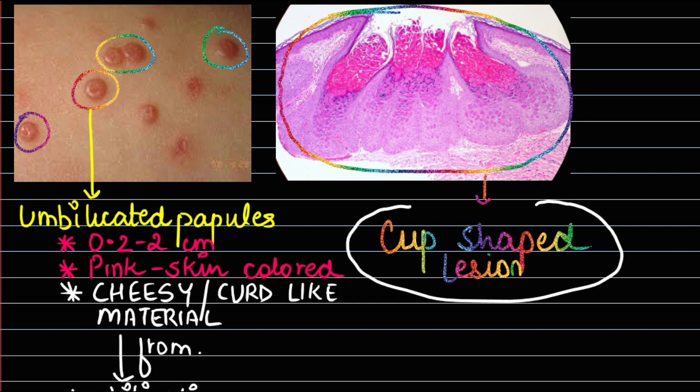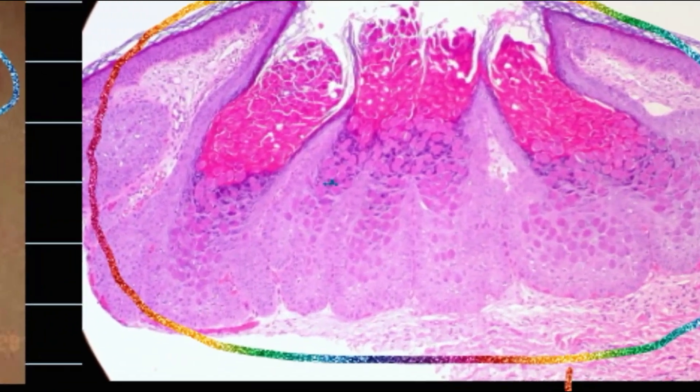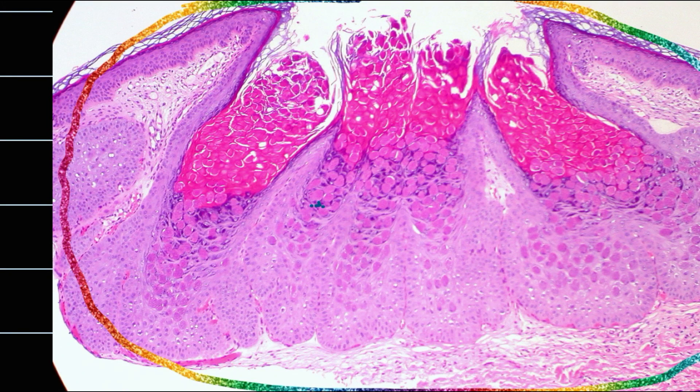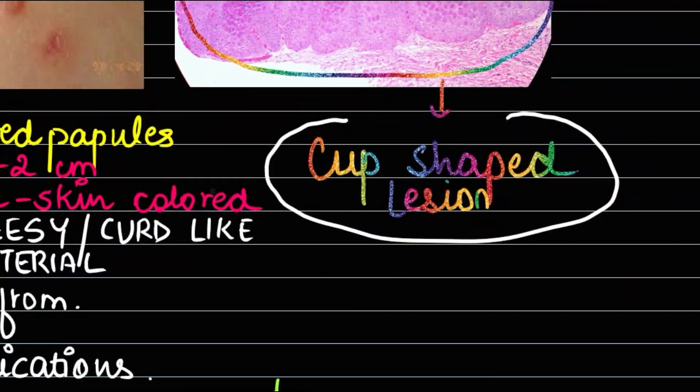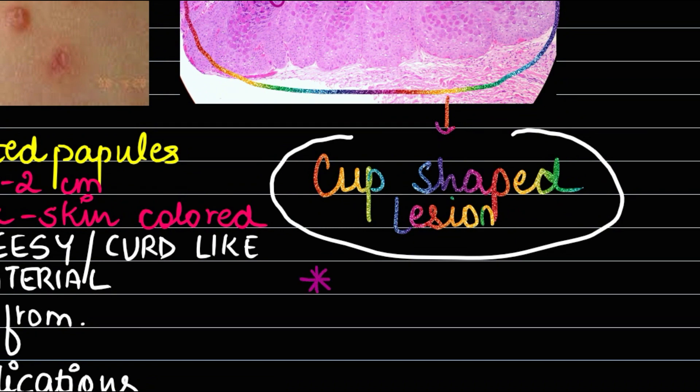Let's zoom in to this image. You can see pink-colored bodies throughout. These pink inclusions have been given a special name - molluscum bodies.